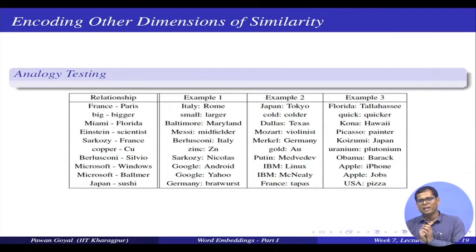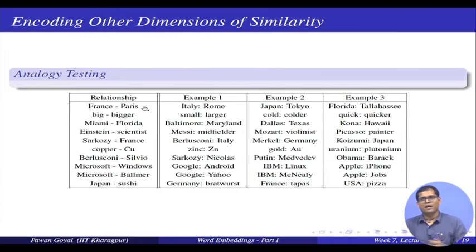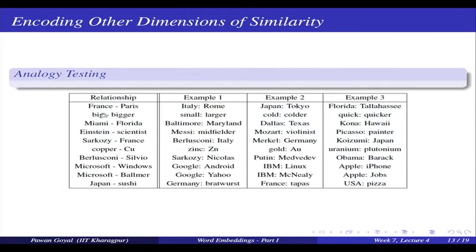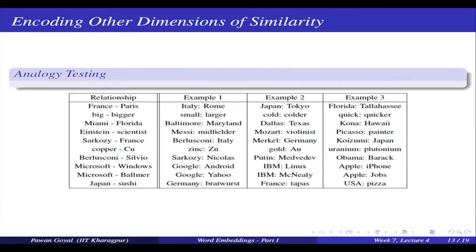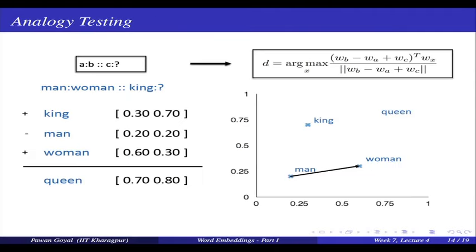So you can use that for analogy testing. What is the analogy testing task? You are given a pair with a certain relation, like France and Paris. Paris is the capital of France. You are given various examples and have to find out which exhibit the same relation — Italy-Rome, Japan-Tokyo, Florida-Tallahassee — which of these has the same relation? Can my vector representation capture this? Similarly, for big-bigger, can you find small-smaller, cold-colder, quick-quicker? And so on.